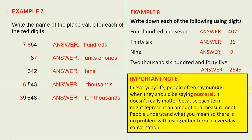Now, here's an important note I'd like you to think about, and please talk to your teachers about it. In everyday life, people often say number when they should be saying numeral. It doesn't really matter, because each term might represent an amount or a measurement. People understand what you mean, so there is no problem with using either term in everyday conversation.